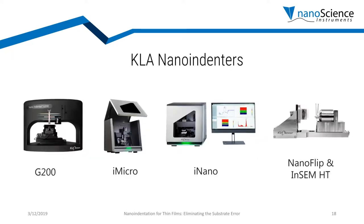The nano indenter can come in different forms. We have the G200, the fully loaded system capable of many different types of experiments beyond thin film property measurement. We have the i-micro and i-nano, desktop systems you can put on a desk in a lab that do not need a dedicated operator. And we have systems that go inside SEMs — the nano-flip without high temperature, and the in-SEM-HT for high temperature experiments.